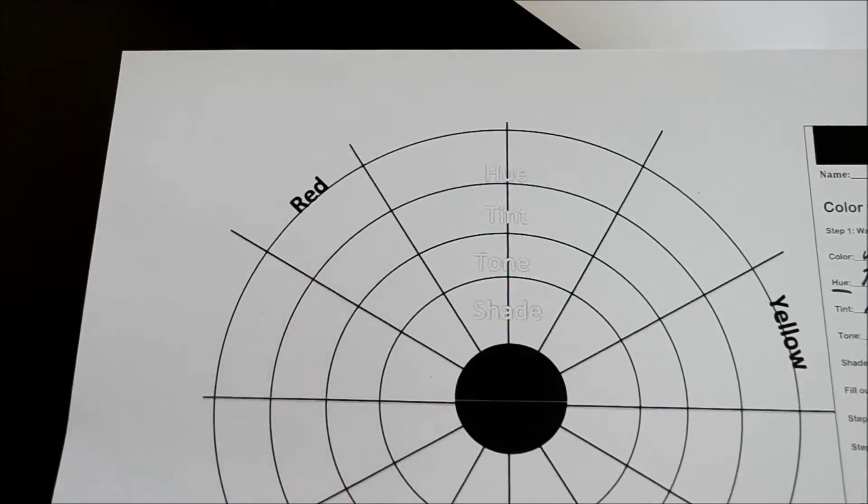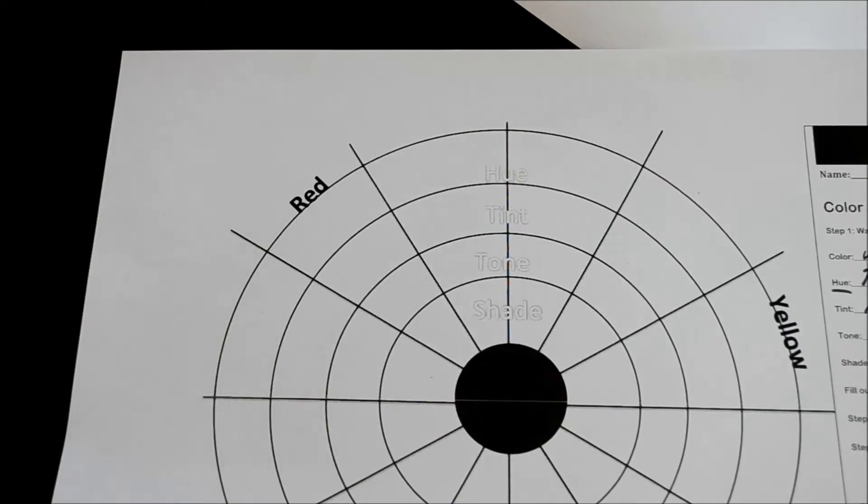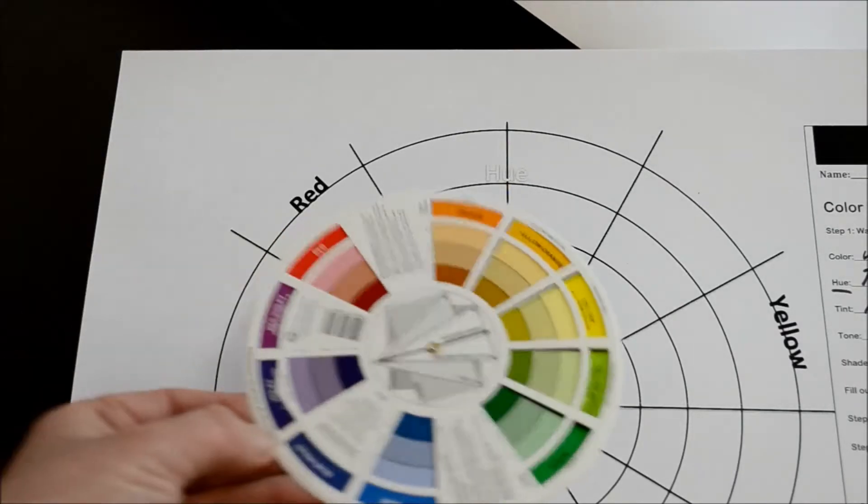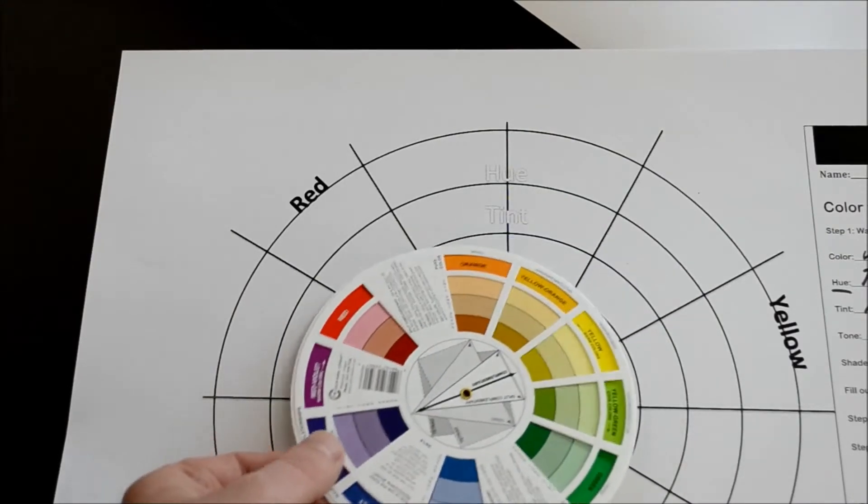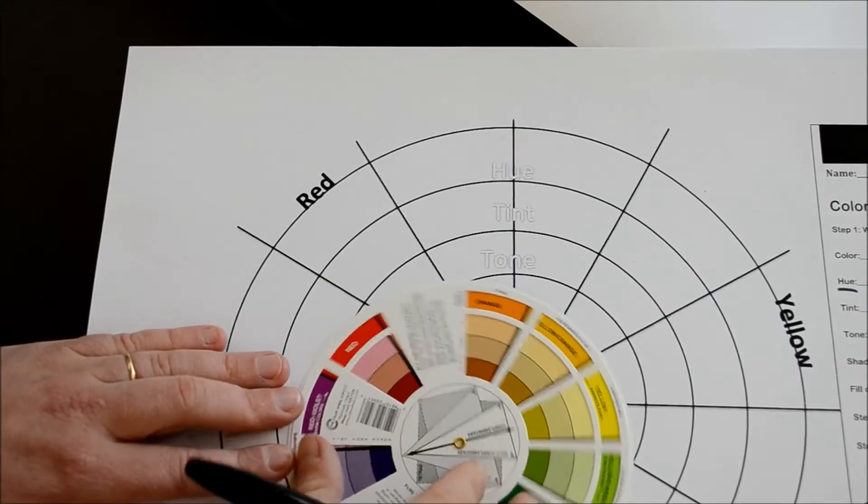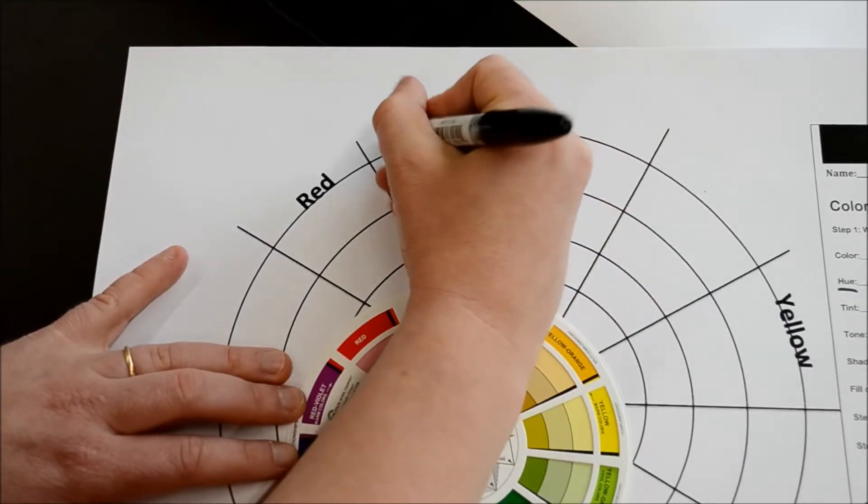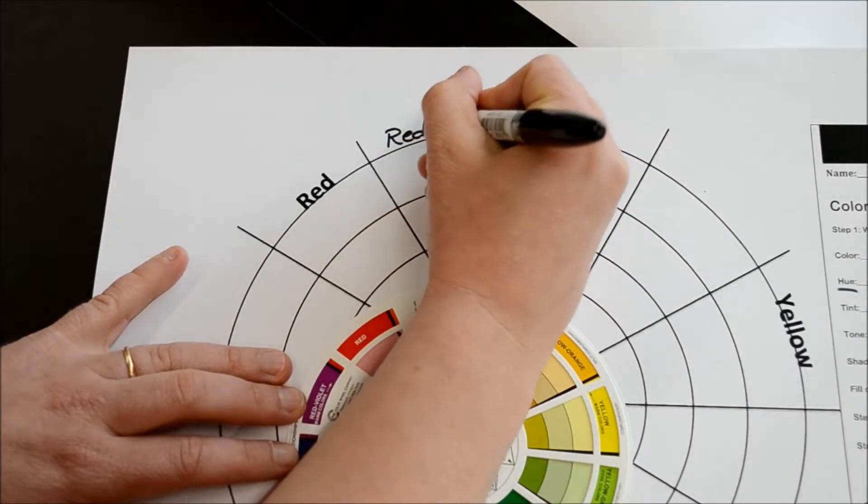We're going to start with red. Your teacher might be able to give you an example color wheel that you can use to fill in these answers. Otherwise, you can follow along with me. So after red comes red-orange.